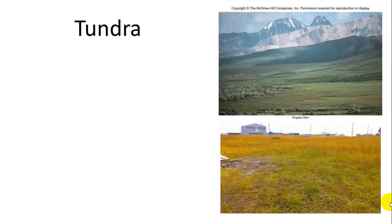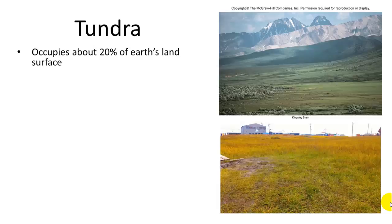We're going to go through the different biomes, starting more northern or southern in latitude — extreme in latitudes — and then go towards the equator. The first one, at the more northern and southern latitudes, is the tundra. It occupies about one-fifth of Earth's land surface, or 20%, and is primarily above the Arctic Circle.